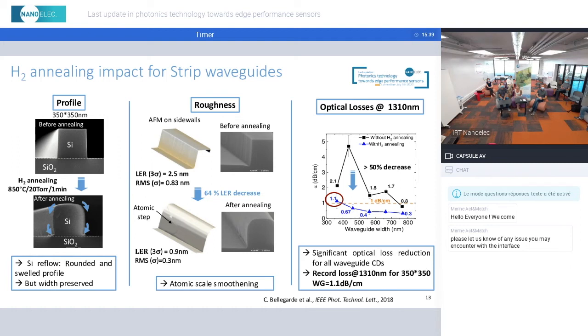On the right, you can see the optical losses that have been measured at 1.3 micron for waveguides with and without this annealing treatment. Those measurements have been performed on several waveguides with different widths ranging from 300 to 800 nanometers. You can clearly observe that for all waveguide CDs, we can get a very good improvement of the loss, reaching even record loss of 1.1 dB per centimeter for 350 by 350 cross-section waveguides.